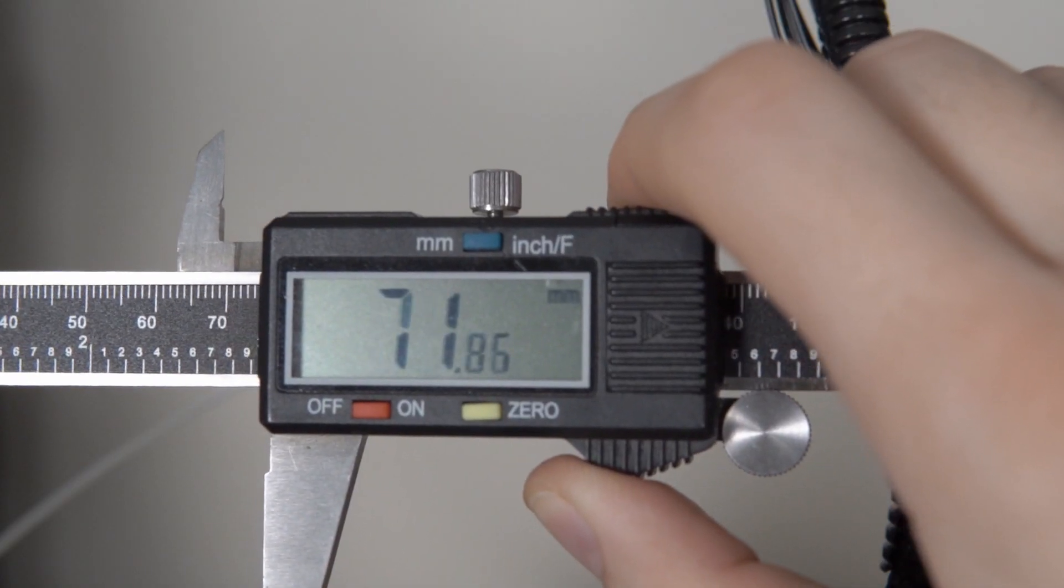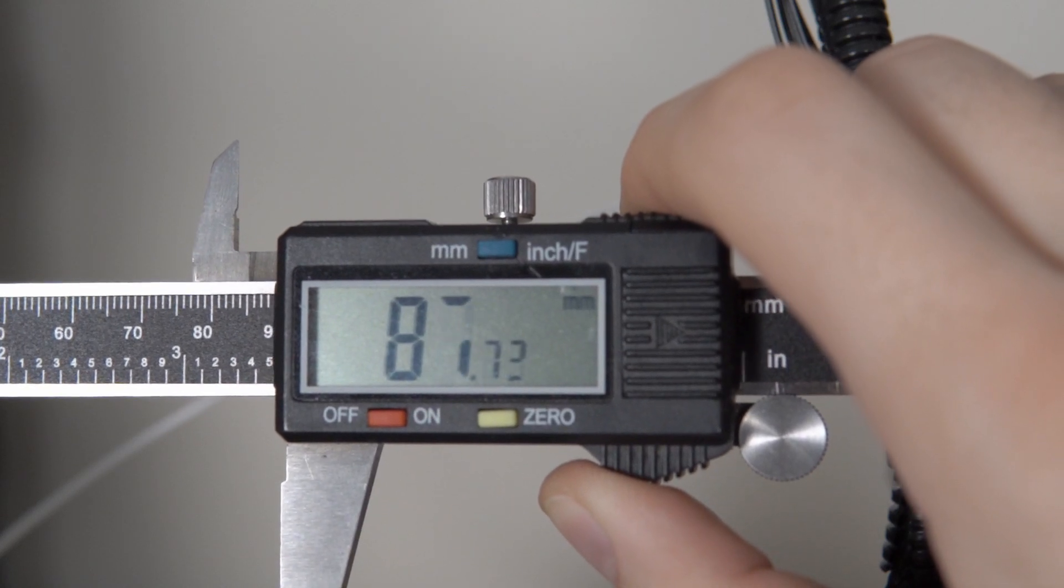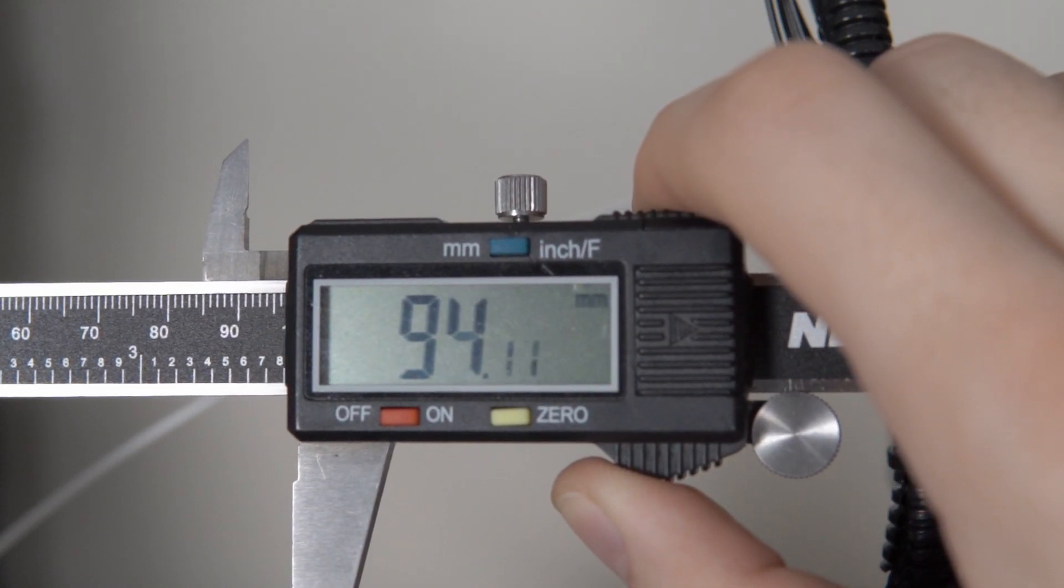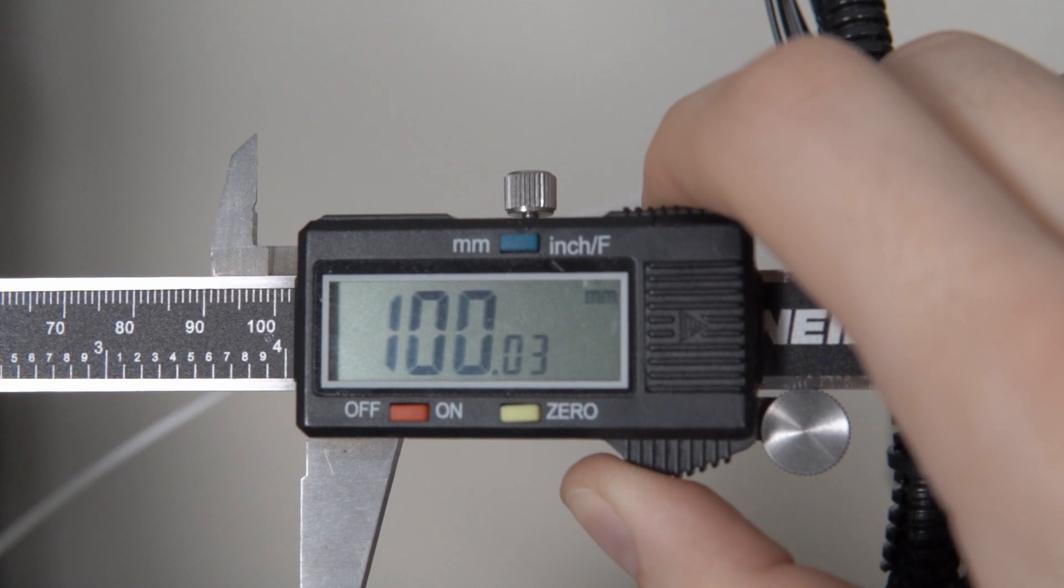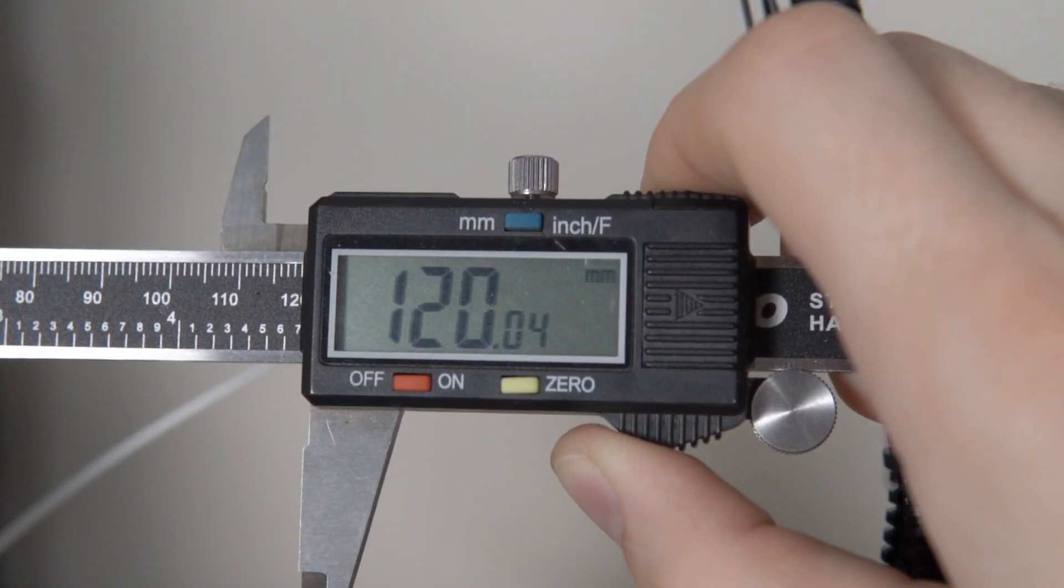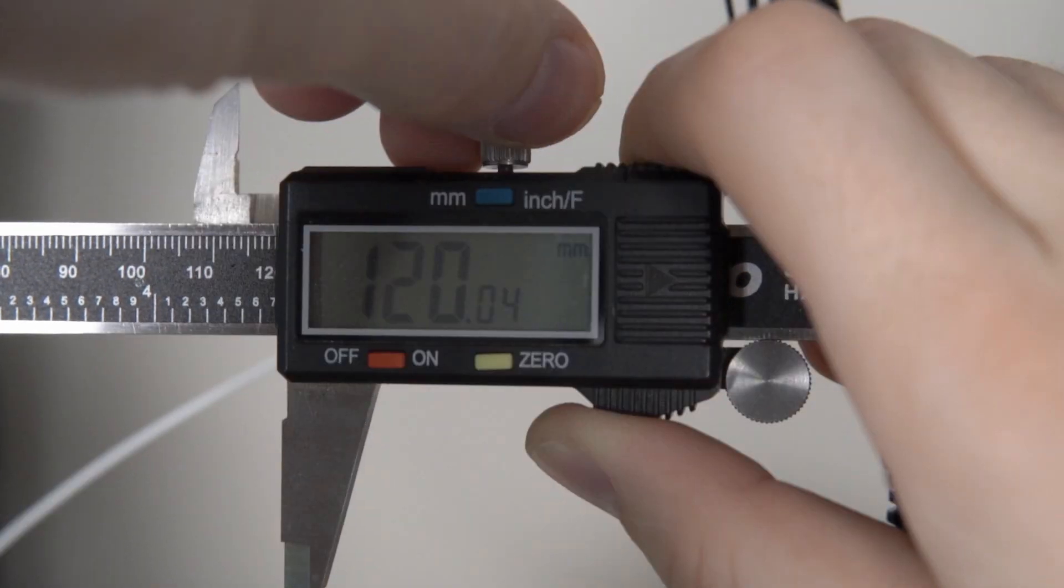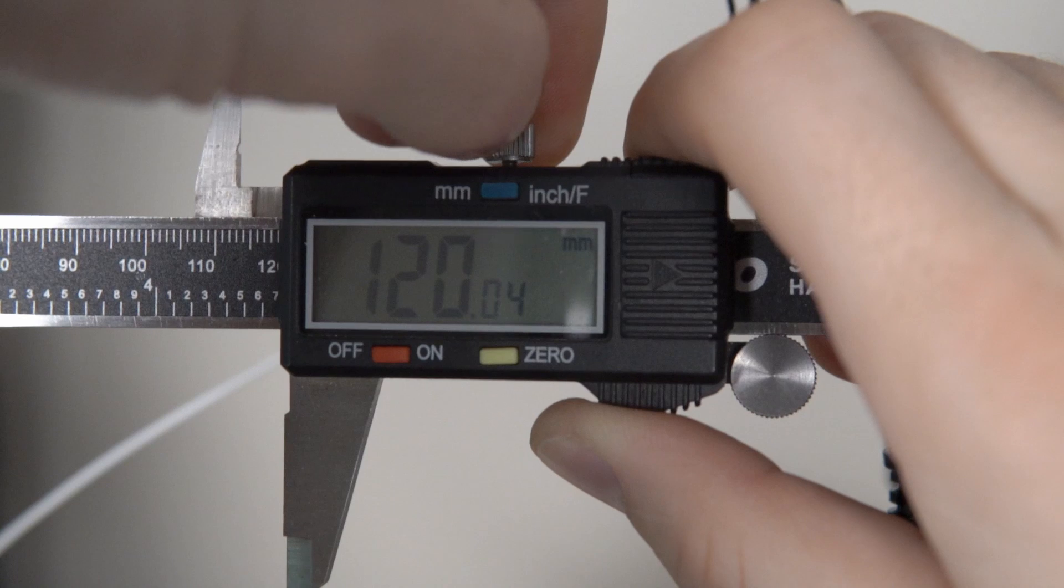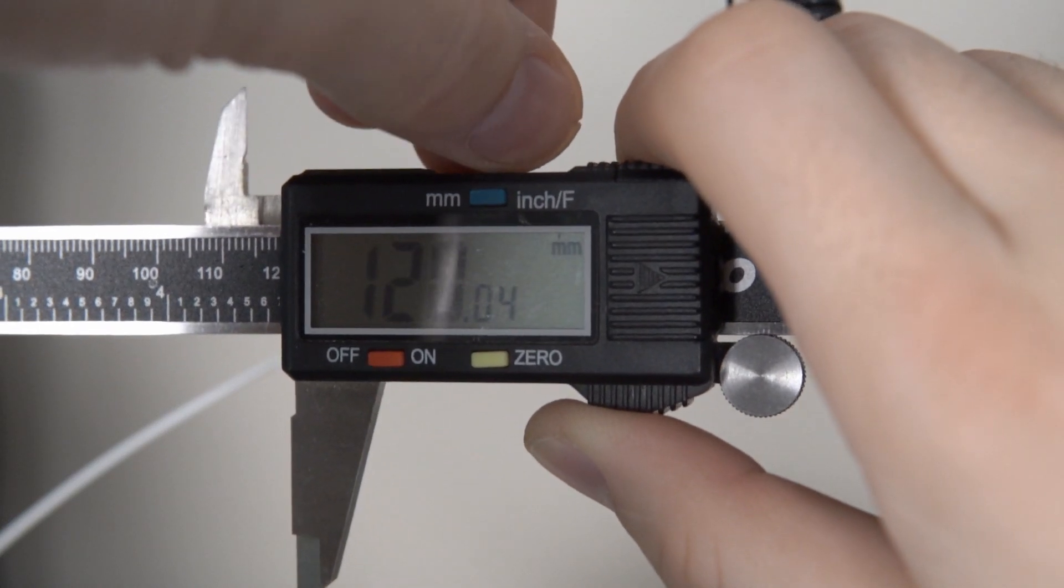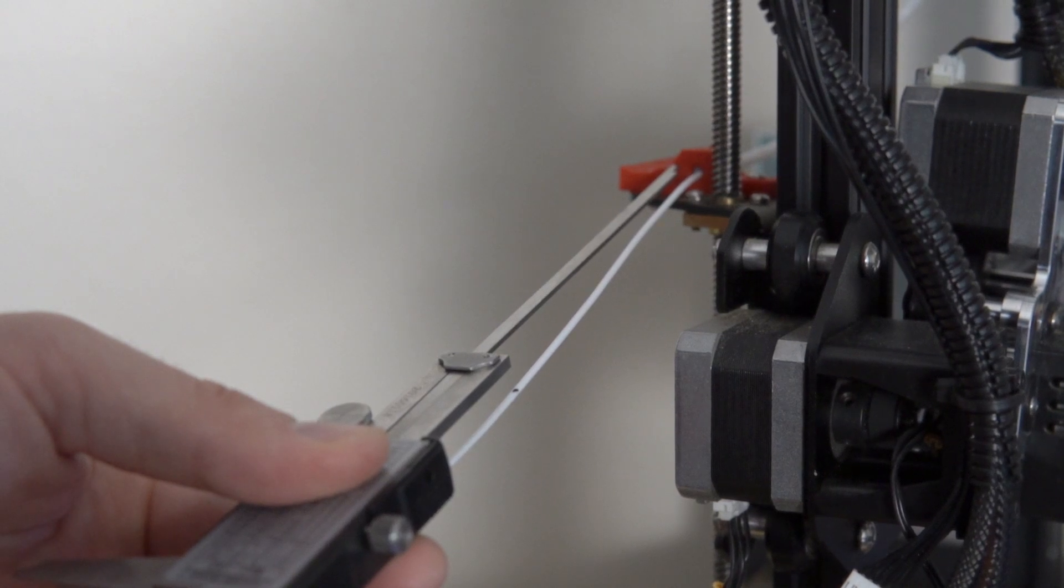Once done, we're going to set our calipers to 120 millimeters so we can mark 120 millimeters on our filament. We're going to have it extrude 100 millimeters, but the reason we're marking at 120 is if your extruder is over-extruding and you only marked at 100 millimeters, when it extrudes 100 it'll go beyond that and you won't see your marking. By marking at 120 millimeters, we're giving ourselves slack in case it's over or under-extruding.